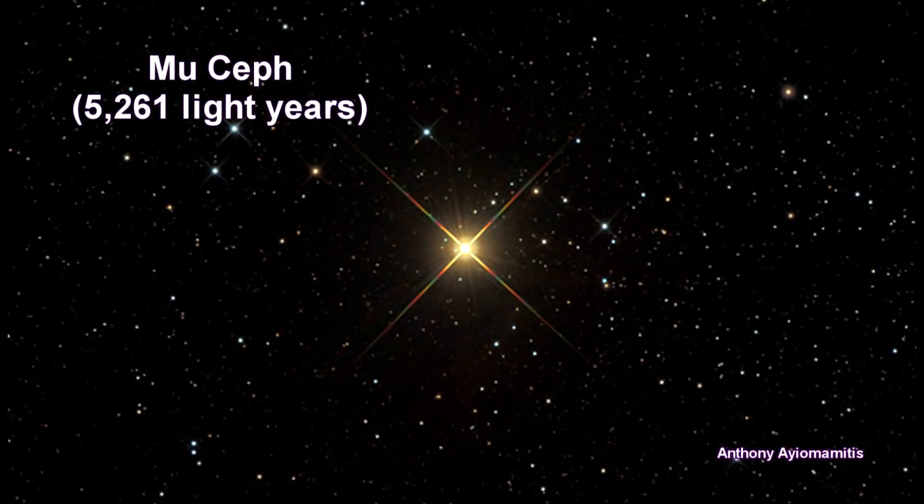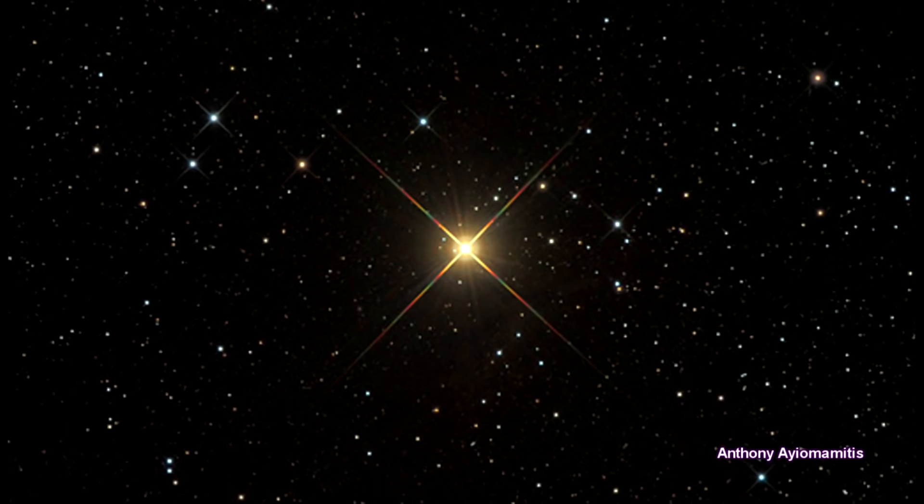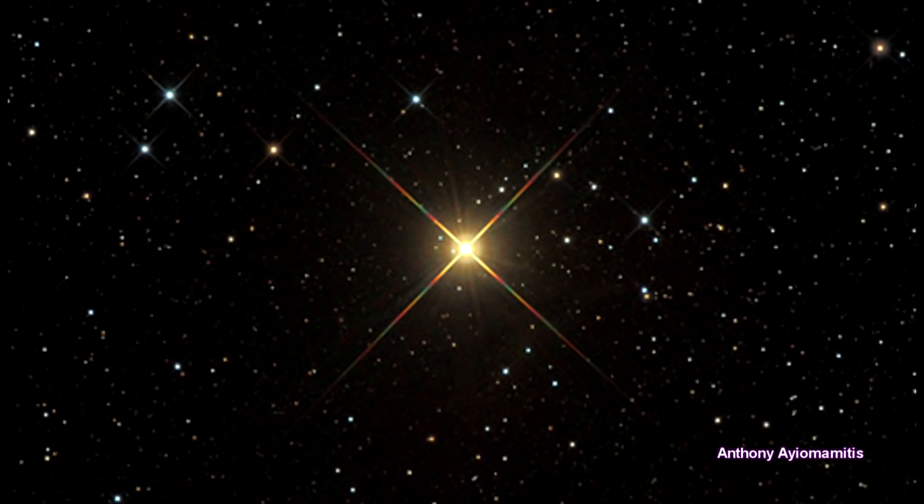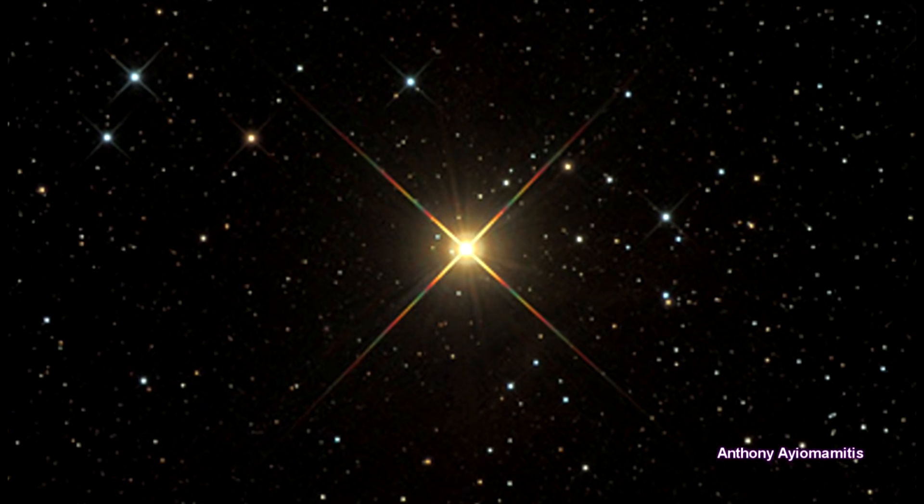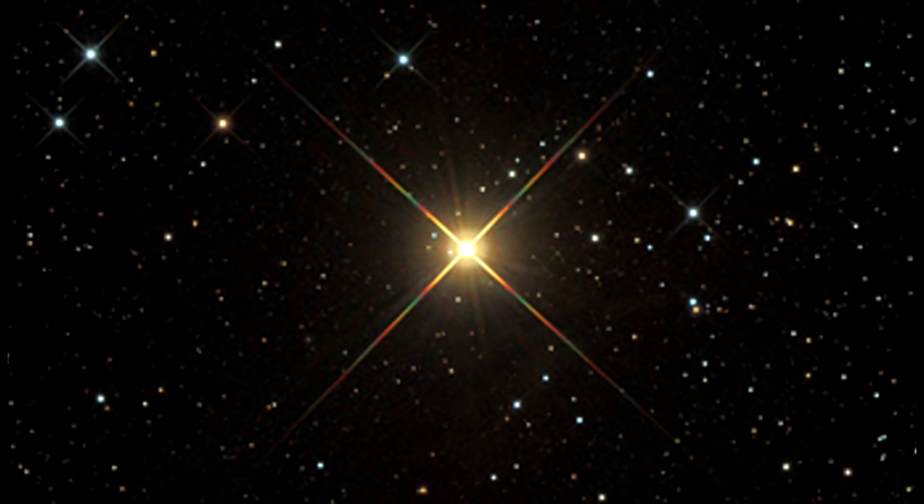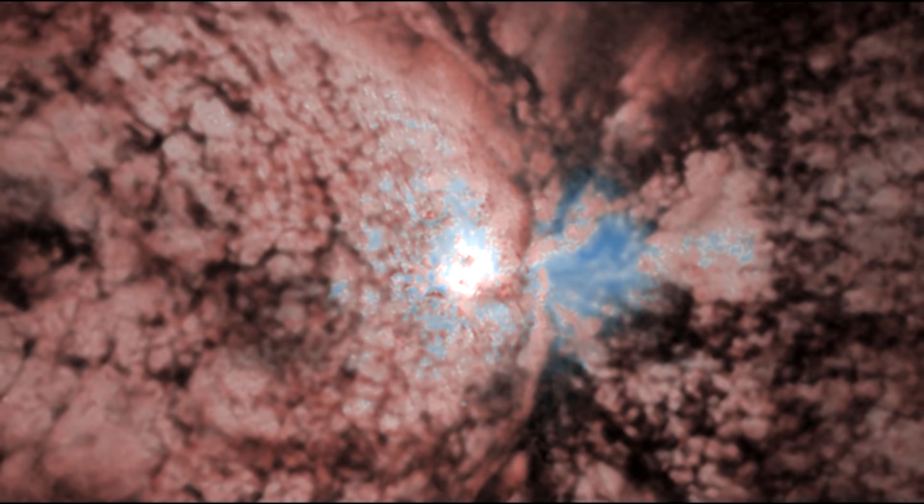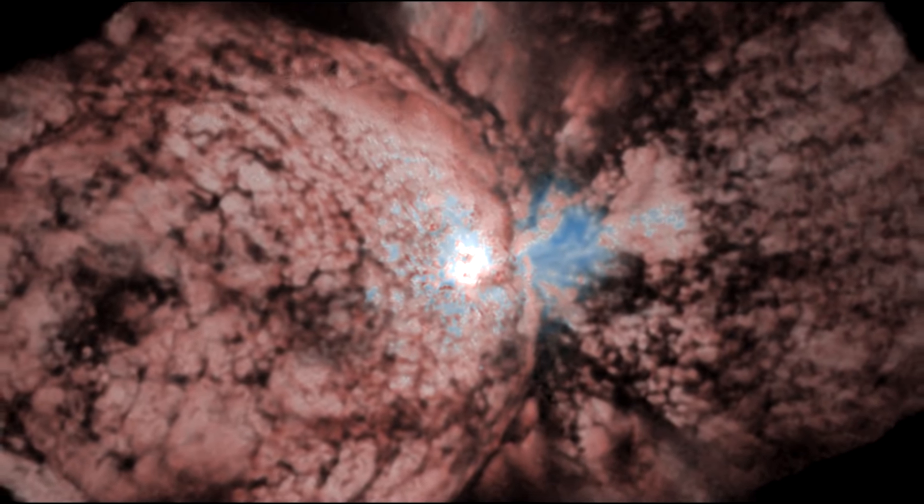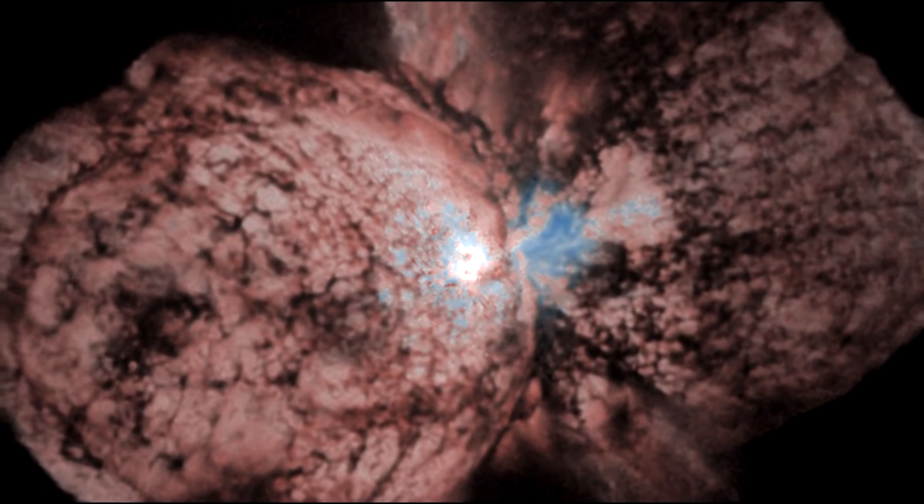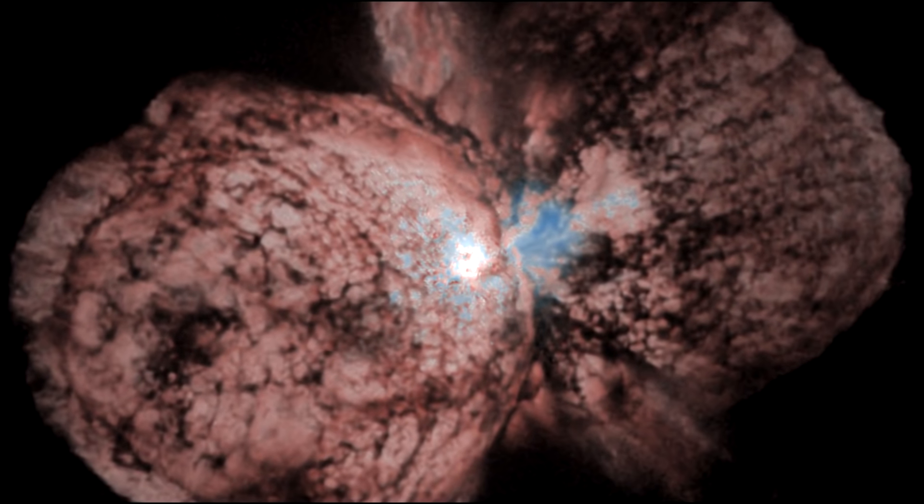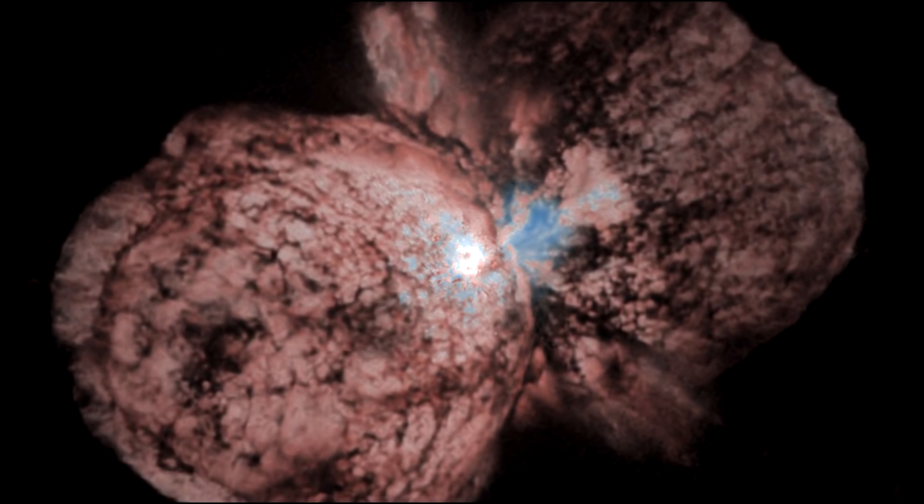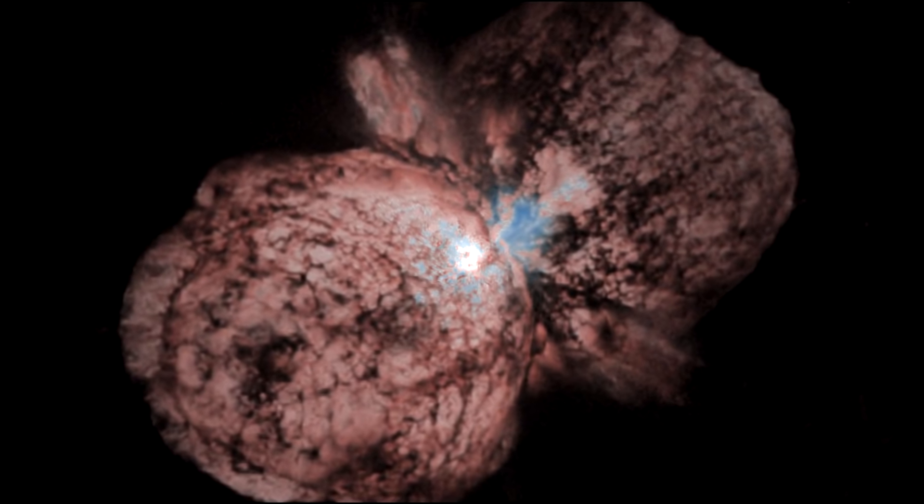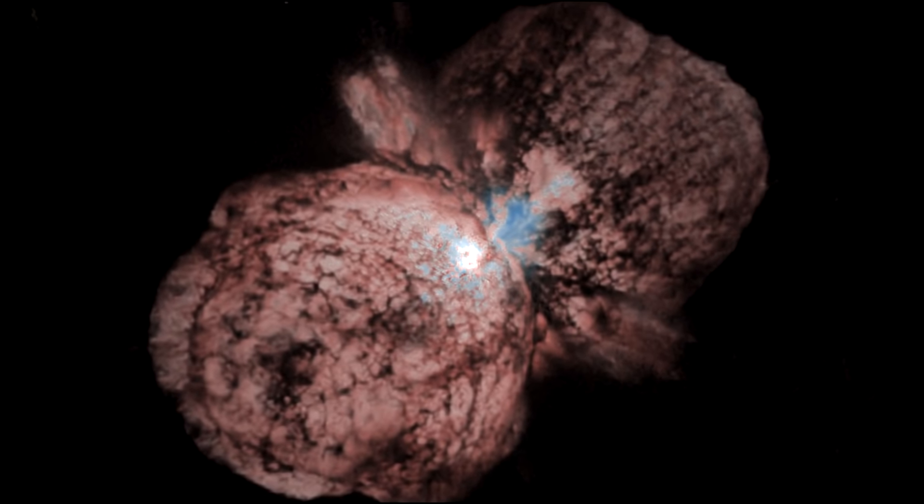Meu Cepheid is a red supergiant star. In fact, it is one of the largest and most luminous stars known in the Milky Way. This star could fit a billion suns into its volume. Eta Carina, 10,000 light years away, is estimated to be 100 times more massive than our sun. It is one of the most massive stars in the galaxy. It radiates about 5 million times more power than our sun. And its mass, as you can see, also makes it very unstable.